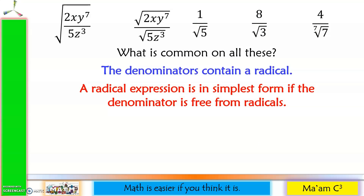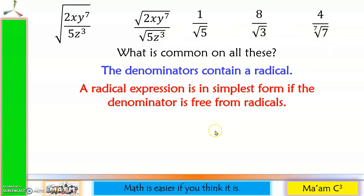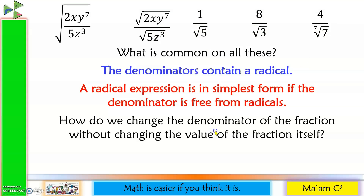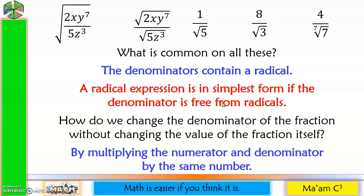So that is our objective for today. We are going to remove the fraction inside a radical, and we are going to make the denominators free from radicals. But the question is, how do we change the denominator of the fraction without changing the value of the fraction itself? The answer is by multiplying both numerator and denominator by the same number.